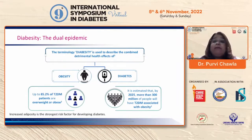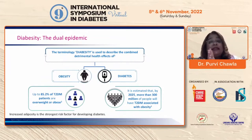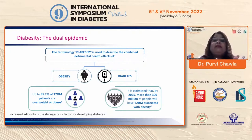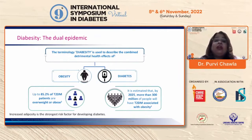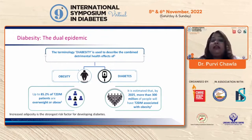The term 'diabesity' describes the combined detrimental effect of this dual epidemic — obesity and diabetes. More than 85 percent of those with diabetes are overweight or obese, and this number is only increasing and will be in the millions in the next few years. In every study done to understand the risk factors associated with diabetes, increased adiposity is the strongest one.